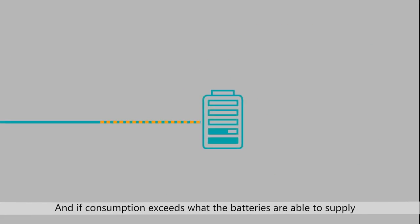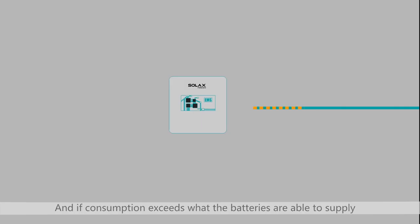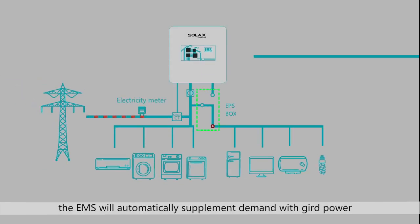And if consumption exceeds what the batteries are able to supply, the EMS will automatically supplement demand with grid power.